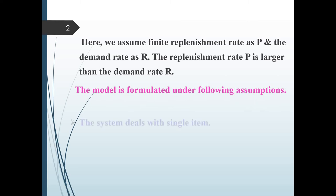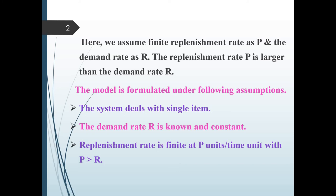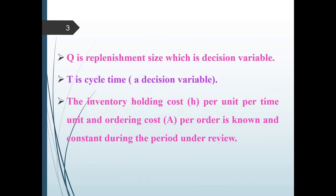The model is formulated with the following assumptions. First, the system deals with a single item. Demand rate R is known and constant. Replenishment rate is finite at P units per time unit with P greater than R. Shortages are not allowed and lead time is zero. Q is the replenishment size, which is a decision variable. T is the cycle time, also a decision variable. We know that Q and T are related as Q equals R times T, that is demand times cycle time. The inventory holding cost H per unit per time unit and ordering cost A per order are known and constant during the period under review.